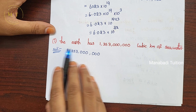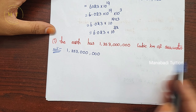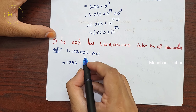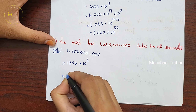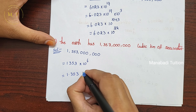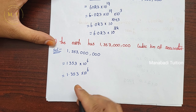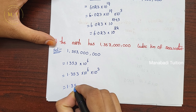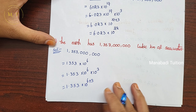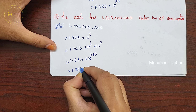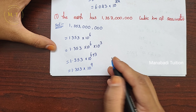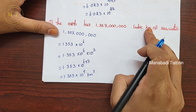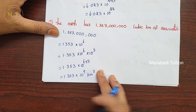Next, part H — the Earth has a certain number of cubic kilometers of sea water. The number is 1353 with 6 zeros, so write 10 power 6. The number becomes 1.353. Count 3 digits before the point, so multiply by 10 power 3. Add exponents: 6 plus 3 equals 9. The answer is 1.353 into 10 power 9 km³. Since cubic means to the power 3, the unit is km³.